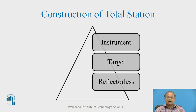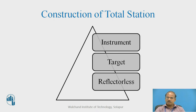The capability of transferring data is available through a memory card, or you can transfer it through Bluetooth or USB. There is a horizontal clamp, vertical clamp, and a focusing screw on the eyepiece end; on the opposite side is the objective end. There are guides for the person moving on the field with the reflector to confirm whether his position is compatible with the line of sight of the instrument.